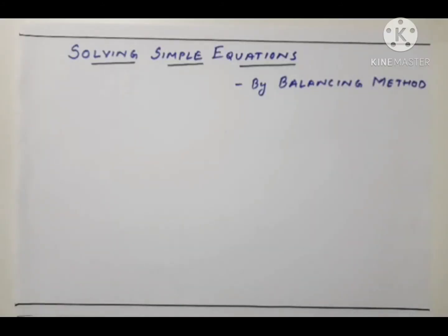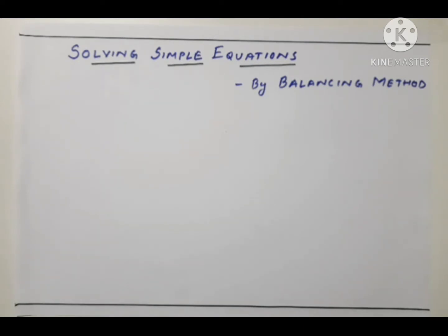Today's discussion is about solving simple equations by the balancing method. Solving an equation means finding the solution — finding the value of the variable which satisfies the equation. That means if you put that value for the variable, the left hand side of the equation must be equal to the right hand side. Here we'll be using the balancing method.